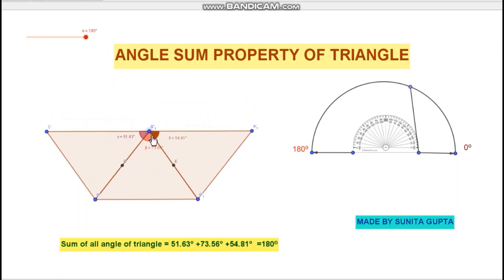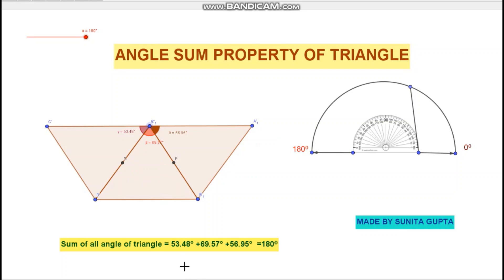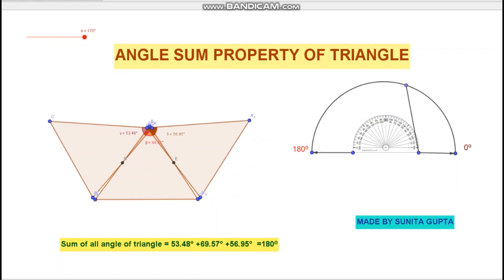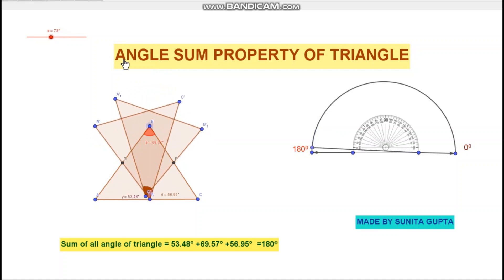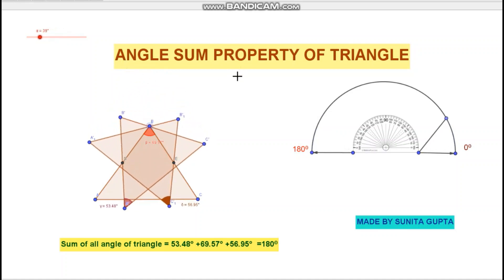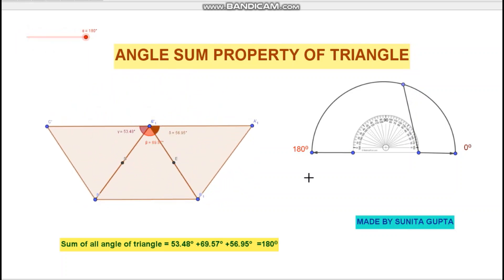If I change the shape of the triangle, all angles still make a linear pair, which means that the sum of the angles of the triangle is 180 degrees.